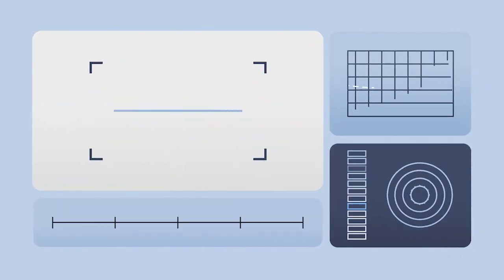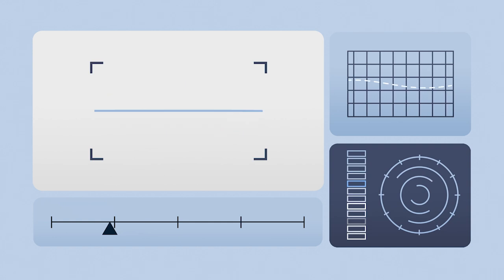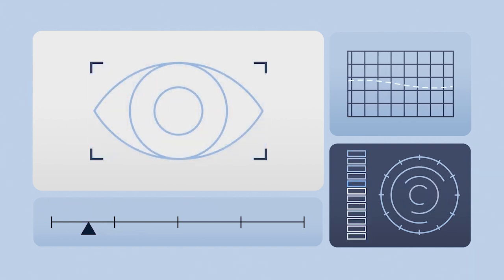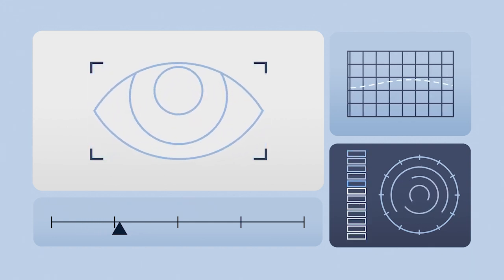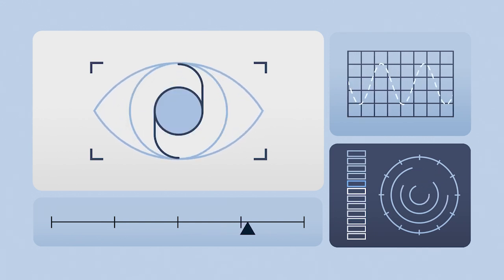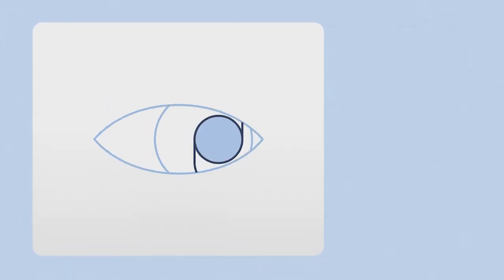In traditional cataract surgery, measurements of the ocular anatomy are taken before surgery. These are used to calculate the fixed lens power that is most likely to achieve a patient's desired visual outcome.